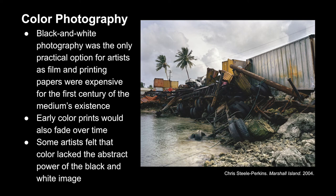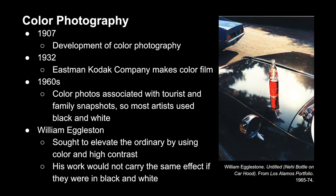In the early 1900s, specifically 1907, we see the development of color photography. By 1932, Eastman Kodak Company made color film. As it became more accessible and affordable in the 1950s, by the 1960s it was primarily associated with tourist and family snapshots — a connotation that many artists really wanted to stay away from, so they stuck with black and white photography.